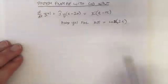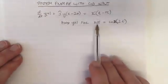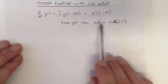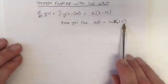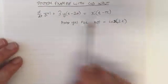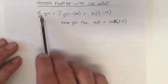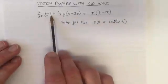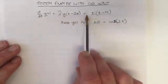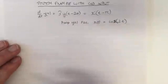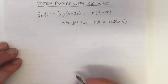Here's a system example where we're asked to find y(t) for an input x(t) which is cos(2t). Here's our system: we've got the derivative of y plus three times a time-shifted version equals the time-shifted version of the input.